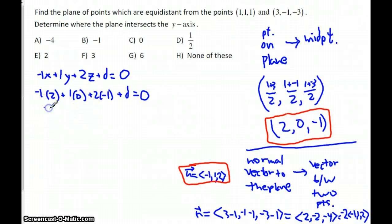And so, we get negative 2, minus 2, plus d is 0, so d is 4.